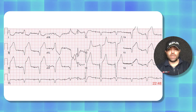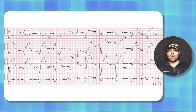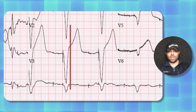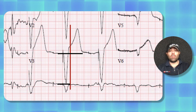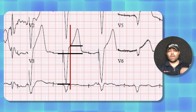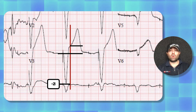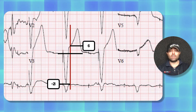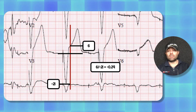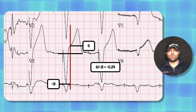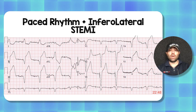Here's another patient presenting with chest pain and shortness of breath. Again, there's no concordant change in any of the leads. Looking at the leads with the biggest amplitude, the red line is the J point and the black line is the baseline. Counting the boxes gives negative 21 for the QRS amplitude and six for the ST elevation at the J point. Dividing these gives negative 0.29, which is 29% — greater than 25%. This ended up being a paced rhythm with an infralateral occlusion myocardial infarction.